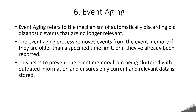What is event aging? Event aging refers to the mechanism of automatically discarding old diagnosed events that are no longer relevant. Whenever you report an event within the same driving cycle and there is a subsequent report of inactivation, and no further event is reported in the upcoming operation cycle or aging cycle — the aging cycle value is configured during configuration — then the already reported event will be removed from memory. The main reason for this is to prevent the event memory from being cluttered with outdated information and to ensure only current and relevant data is stored.